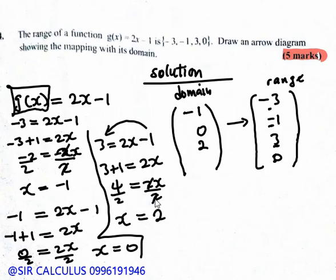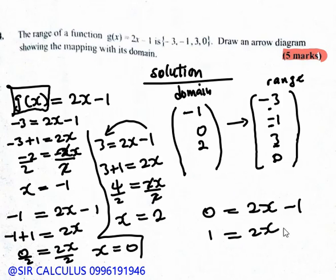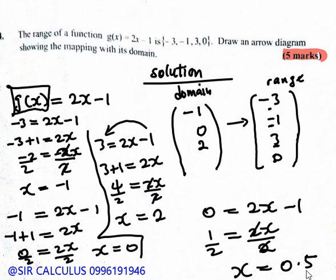For g(x) = 0: so 0 = 2x - 1, giving 1 = 2x. Dividing both sides by 2, x = 0.5. So 0.5 is also a number in the domain.